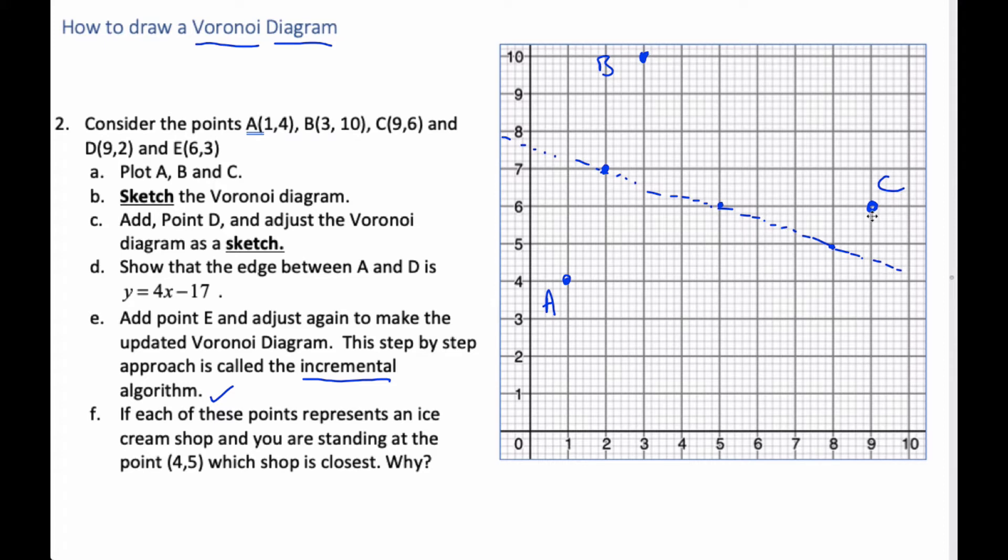Then I go to B and C, I do again. And conveniently, if I go over 3 and up 2, over 3 and up 2, I get my midpoint. And so now my slope, if I go over 2 and down 3, over 2 and down 3 is the opposite of my slope. So, and I come through here and it should go through here approximately.